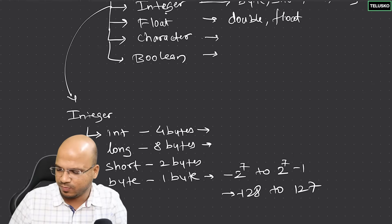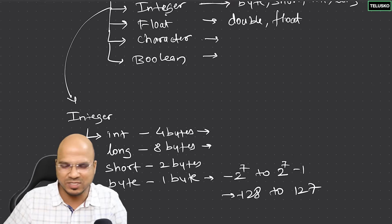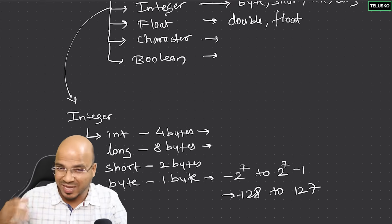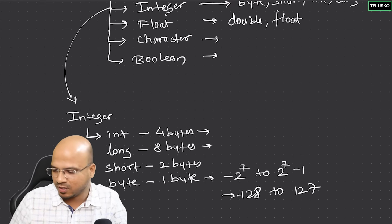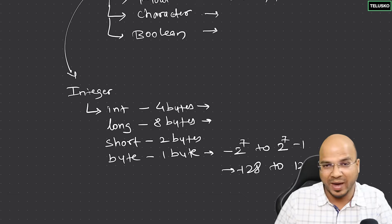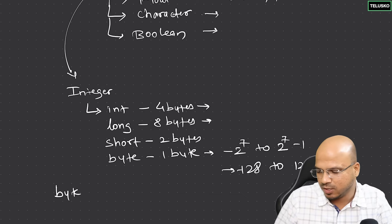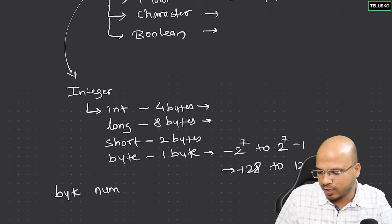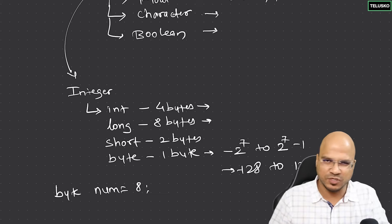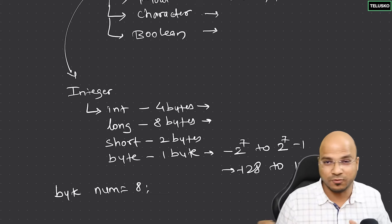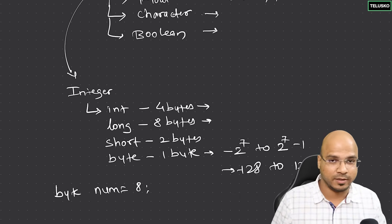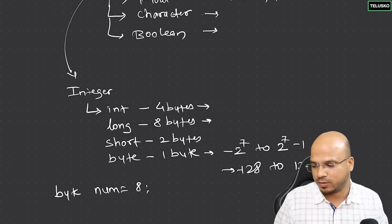So which one to use? If you want a variable that will hold a value like 5, 6, or maximum 127, you can go for byte. It's very simple — you use the type byte, specify a variable name like num, and assign a value like 8 or any other value within the range, and that's how you store it.